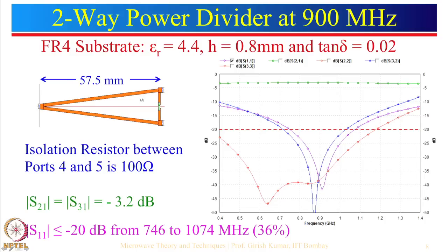This particular dimension can shift the isolation peak. S22 and S33 are actually fairly good — if we look at a minus 20 dB bandwidth, these are well below that. So the matching at output ports is very good, and matching at the input port and isolation are both fairly decent over the desired 890 to 960 MHz range.